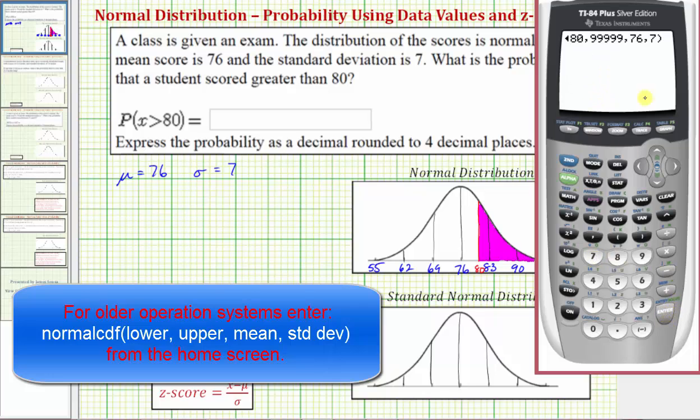Now if you do have an older operating system, you'll need to remember that when the normal CDF feature is on the home screen, you'll have to enter the lower bound, comma, upper bound, comma, the mean, comma, standard deviation, and then close parenthesis. Now if we press enter, we'll have our probability.